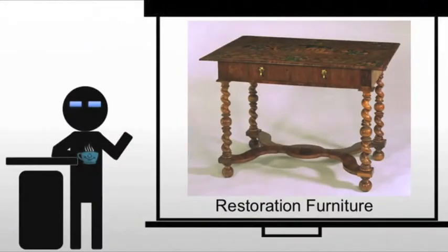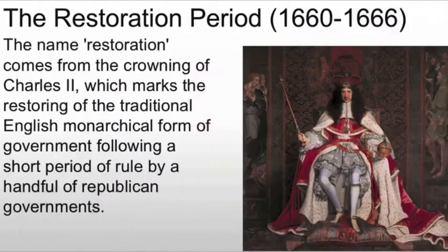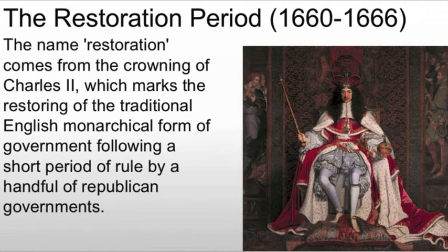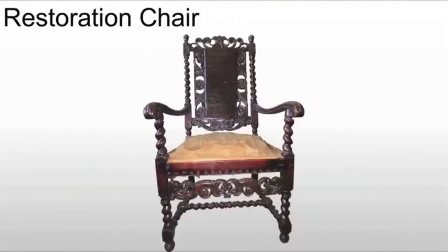Let's start with Restoration furniture. This is the transitional period between the Jacobean and the William and Mary style, tied to the restoration of the monarch, Charles II, following Oliver Cromwell — hence the Restoration period. This comes from the crowning of Charles II. There had been a lot of problems in England, and during times of civil strife we don't see a lot of new forms in art, architecture, or furniture. But we will start to see new ideas.